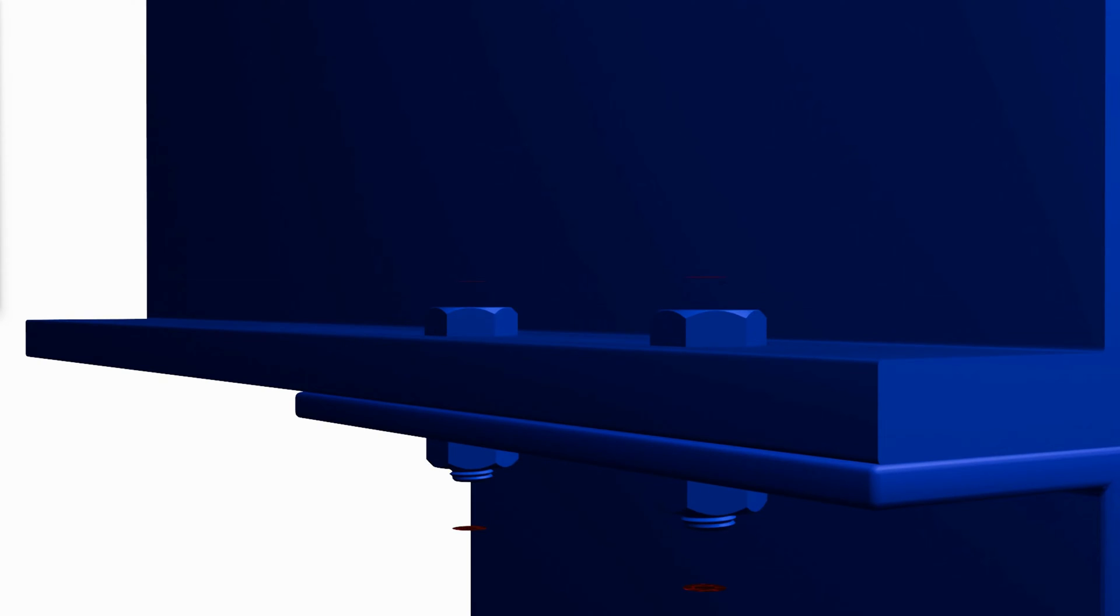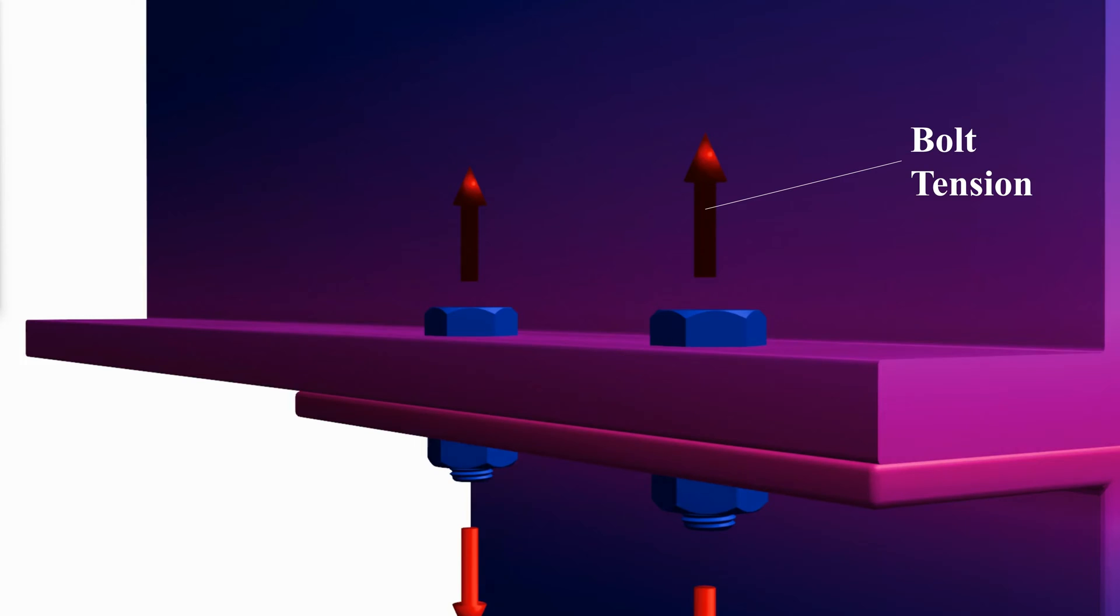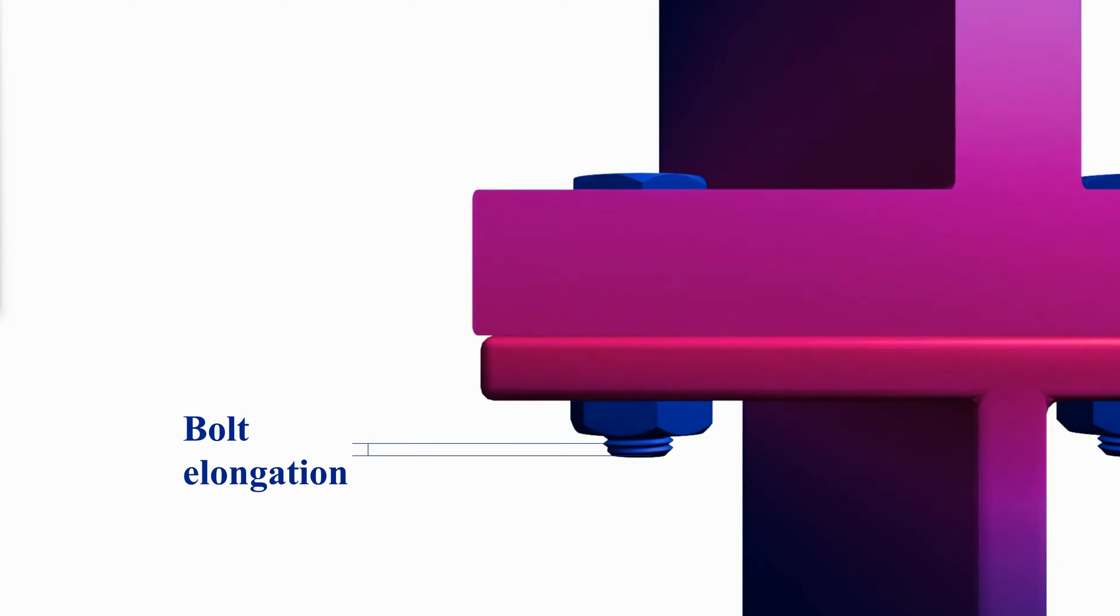When the bolt is pre-tensioned, the bolt will have an internal tension that exists even without the application of external forces on the connection. The tension results in compressive force between the connecting flanges. As a result of the tension, the bolt will elongate and the flanges will contract due to the compressive force.